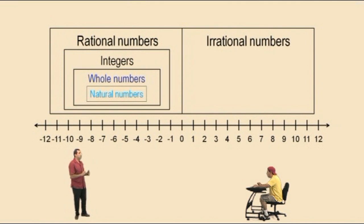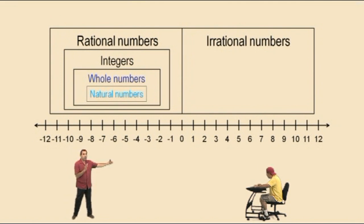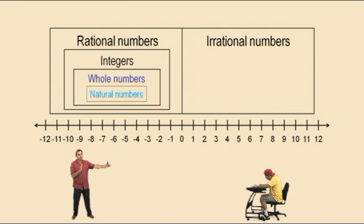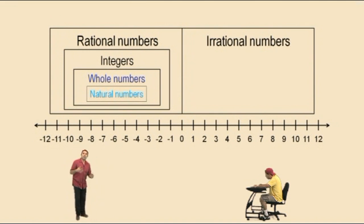The irrational numbers have decimal representations that go on forever, and there is no pattern. For instance, take out your calculator and take the square root of 2 — you'll see a decimal representation that goes on forever and ever. Another famous number that's irrational is pi. It shows up in many different applications of mathematics and is considered an irrational number — you cannot represent it as a fraction.